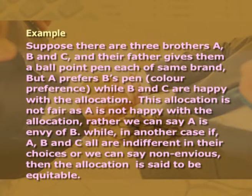What is most preferred by one individual may not be preferred by another and vice versa. For example, suppose there are three brothers A, B and C, and their father gives them a ballpoint pen each of the same brand, but A prefers B's pen due to colour preference, while B and C are happy with their allocations. This allocation is not fair as A is not happy — we can say A is envious of B. While in another case, if A, B and C are all indifferent in their choices, or non-envious, then the allocation is said to be equitable. Thus, in the third case, if the allocation is both Pareto efficient and equitable, the allocation is said to be a fair allocation.